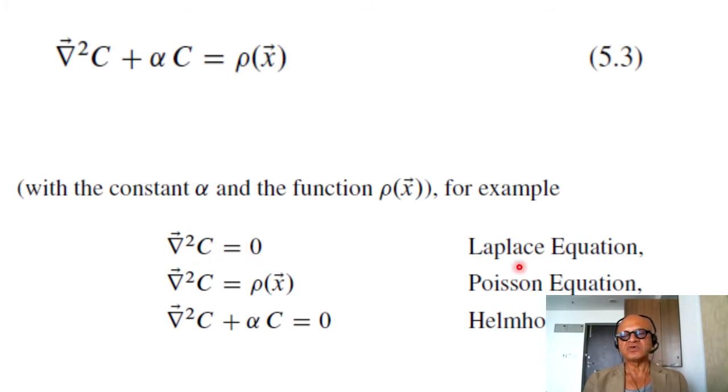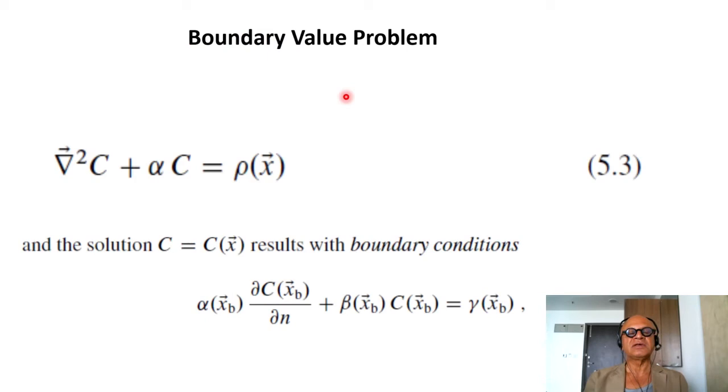So grad squared c equals 0 gives us the Laplace equation, as we have seen before, without calling it a boundary value problem. Grad squared c equals rho x gives us Poisson—we usually in English might say Poisson, but in French they say Poisson equation. And if you have rho going to 0 but you have alpha that is non-zero, then you end up with what is known as the Helmholtz equation. Just remember these names, not necessarily explicitly part of climate problems, but equations of those forms will appear in our climate modeling and climate system.